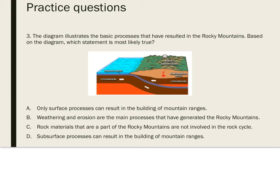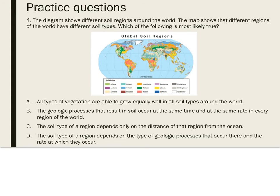Question four: the diagram shows different soil regions around the world. The map shows that different regions have different soil types. Which of the following is most likely true? Different soil types depend on the type of geologic processes that occur in a region and the rate at which they occur. Geologic processes that can result in differing soil types include weathering, erosion, deposition, and volcanic activity. Areas with high amounts of deposition, such as deltas, often have very fertile soil. The answer is D.